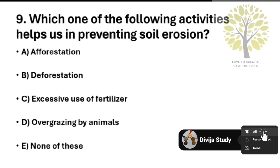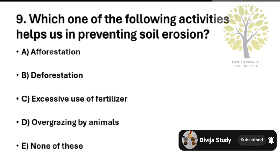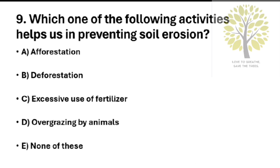Question number 9: Which of the following activities help us in preventing soil erosion? Option A: Aforestation. Option B: Deforestation. Option C: Excessive use of fertilizer. Option D: Overgrazing by animals. Option E: None of these. The answer is Option A, Aforestation.